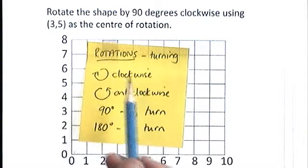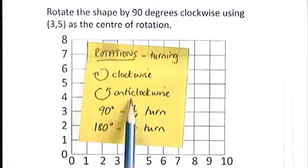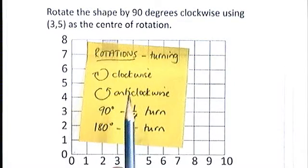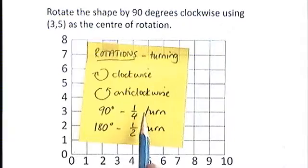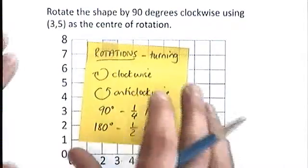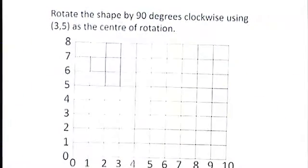The other things that you need to know are clockwise and anticlockwise, which direction they are. And you need to know that 90 degrees and 180 degrees—90 degrees is a quarter of a turn, and 180 degrees is half a turn. We'll be looking at that in a minute.